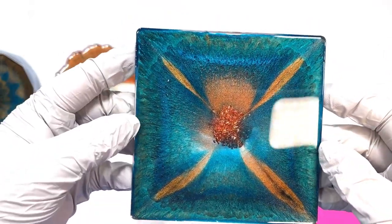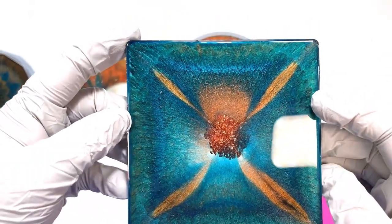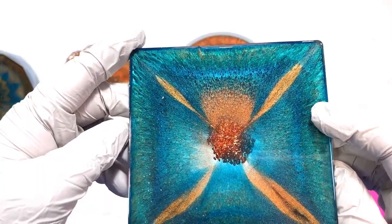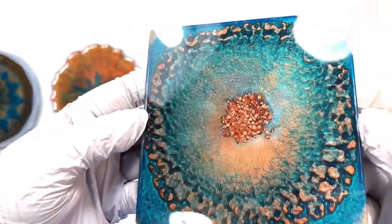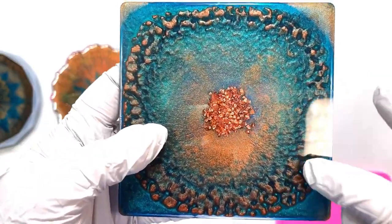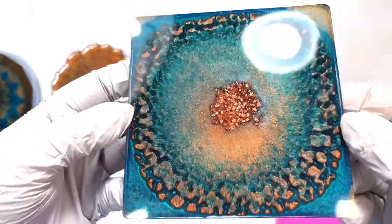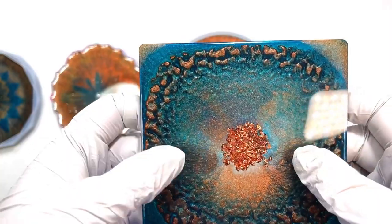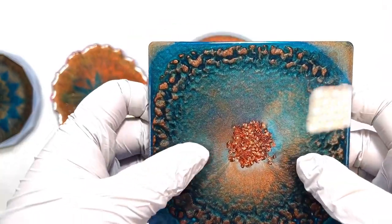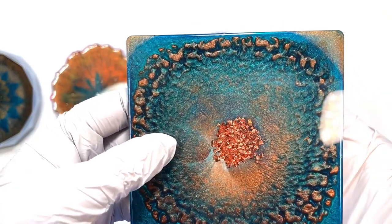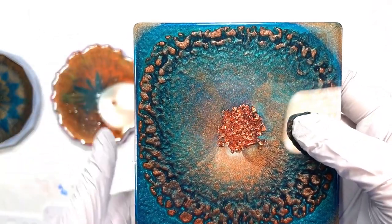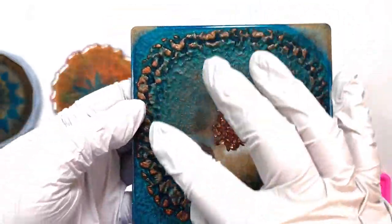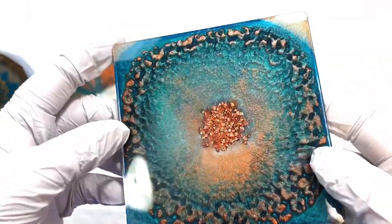So this is the one that the first color that went down was the Just Resin teal pigment paste. Well, that's really cool. So you can see the copper fell through the teal. This one's pretty transparent, but it is very thin. This is a very thin mold. And this only had one layer. So I wonder if that's why it's so transparent, but it looks really neat.